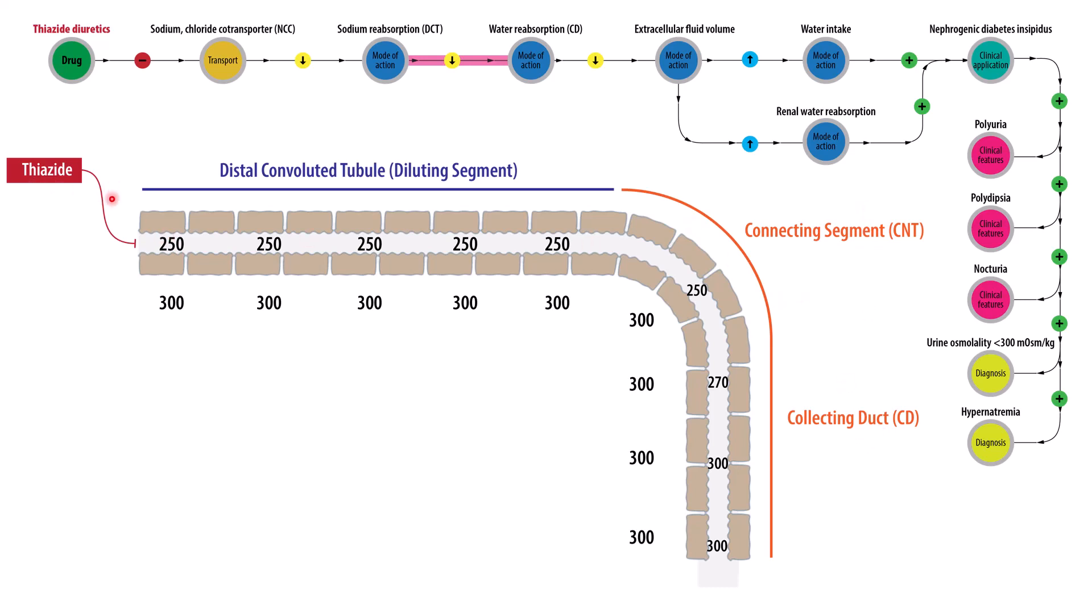So in the presence of thiazide diuretics, sodium chloride is not reabsorbed. So it remains in the lumen. And so that luminal gradient, which normally is much greater, will be diminished. So we have 250 milliosmoles across the luminal side, and then 300 milliosmoles in the interstitial side. So we have a very small gradient for water to be reabsorbed by the time it reaches the connecting segment and collecting duct. So this is why there's less water being reabsorbed, because the gradient is diminished in the distal convoluted tubule.